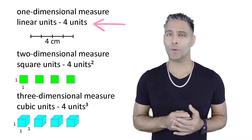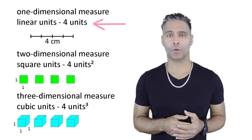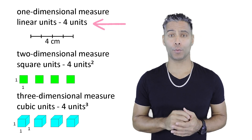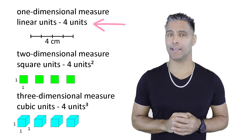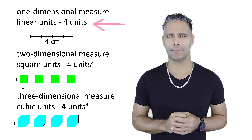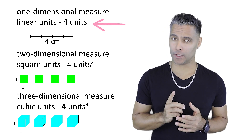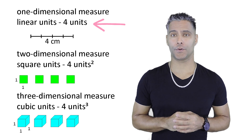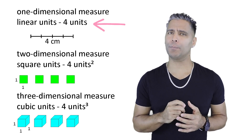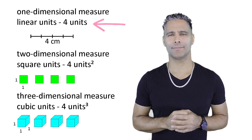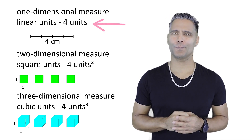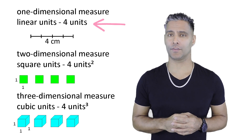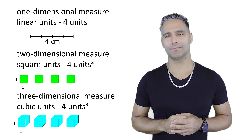Linear units, whether it be centimeters, meters, or any other type of unit, do not have an exponent written at the end of the unit. Even though we don't write one, we should understand that the exponent is to the first power, which represents one dimension. So the line on the screen is four linear centimeters in length, which is one-dimensional.